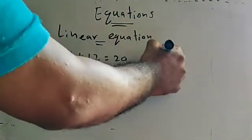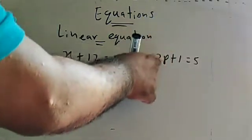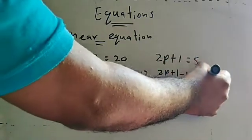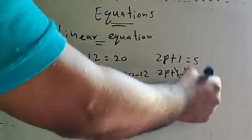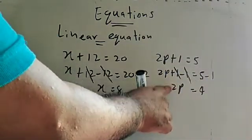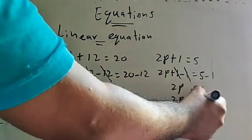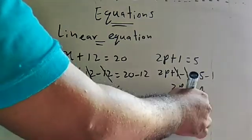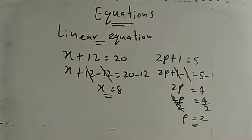Also, 2p plus 1 is equal to 5. To get the value of p: to cancel plus 1, add minus 1 to both sides. Plus 1 and minus 1 cancel, leaving 2p. Then 5 minus 1 equals 4. Since 2p means 2 times p, divide both sides by 2. Two cancels two, so p is equal to 4 divided by 2. The value of p is 2.